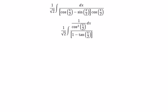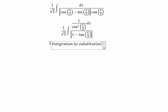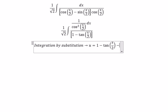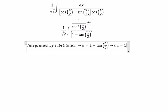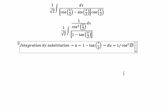Next, we need to use integration by substitution. We put u equal to this expression. Then we take the first derivative, and we get 1 over cosine squared(x/2).